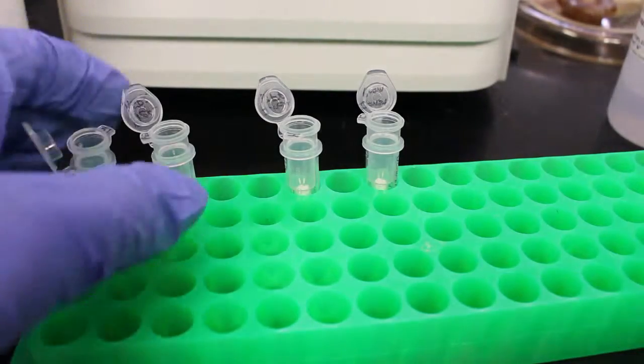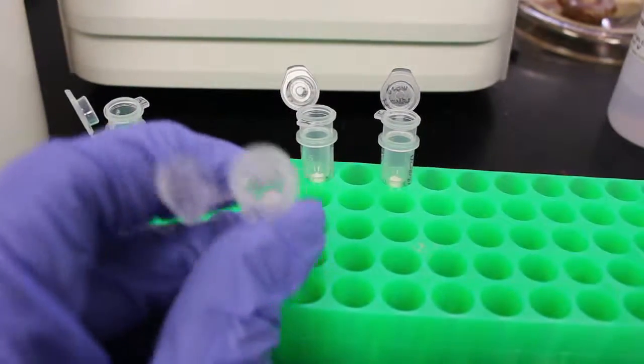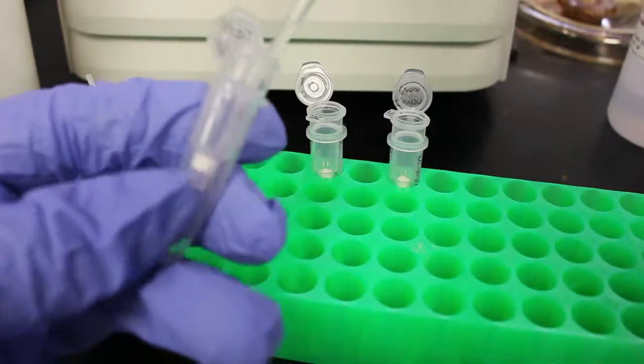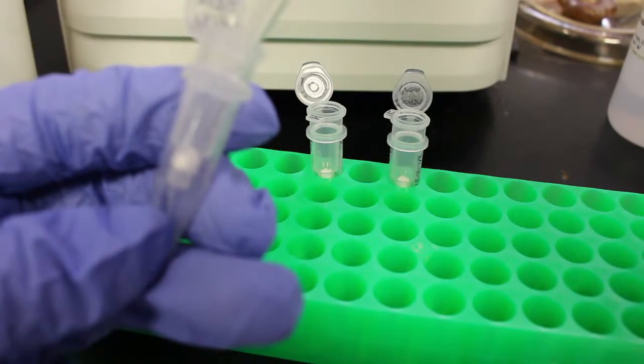Next, place the column into a new, clean, labeled 1.7 milliliter microtube. Add 30 microliters of USP water and incubate for 5 minutes. It's important that you add the water directly to the column, since we'll be working with such small quantities.